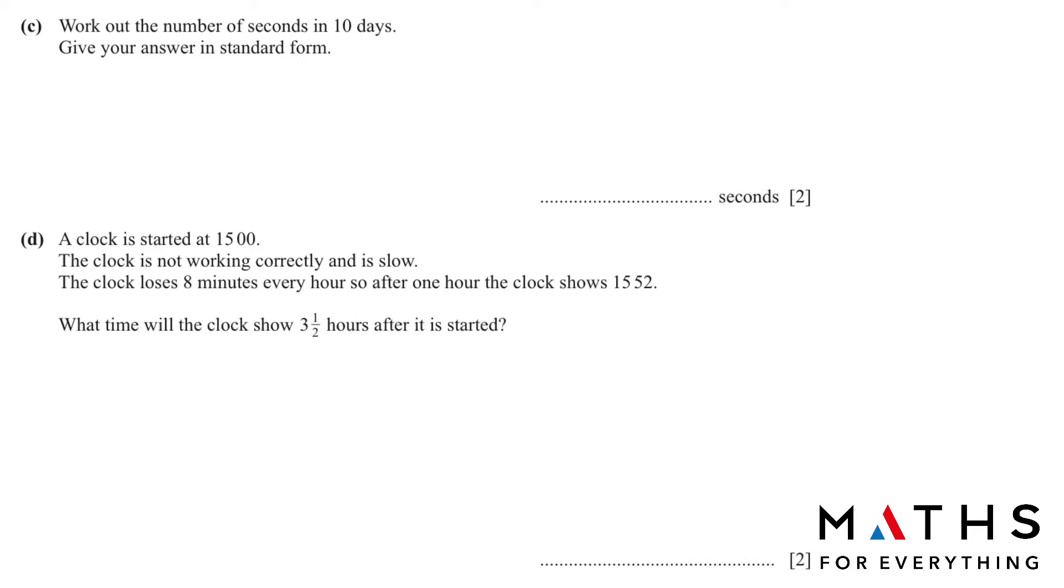In C we have to work out the number of seconds in 10 days and give your answer in standard form. We know that in 1 minute we have 60 seconds. 1 hour has 60 minutes, so 60 multiplied by 60 gives us 3,600 seconds. In 1 day we have 24 hours. So 24 multiplied by 3,600 equals 86,400. This is for 1 day, so for 10 days we multiply by 10.